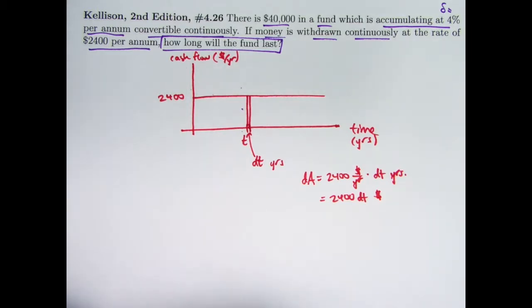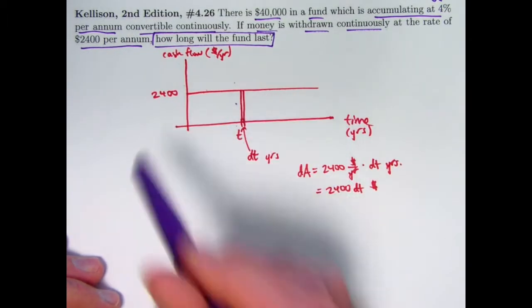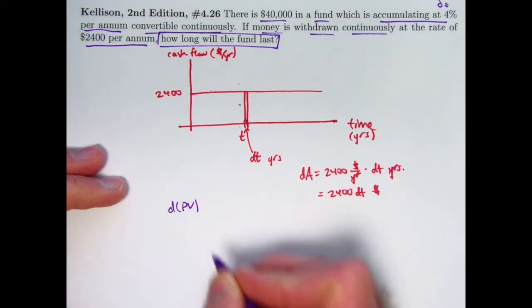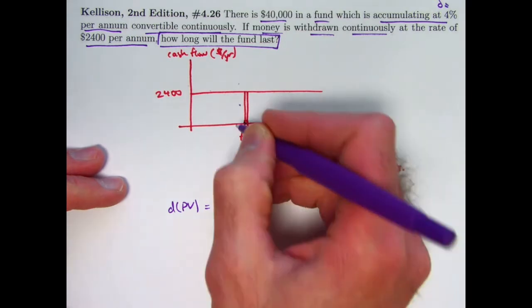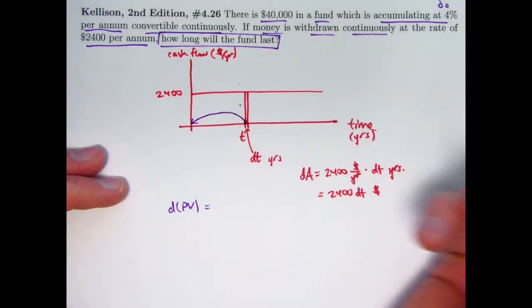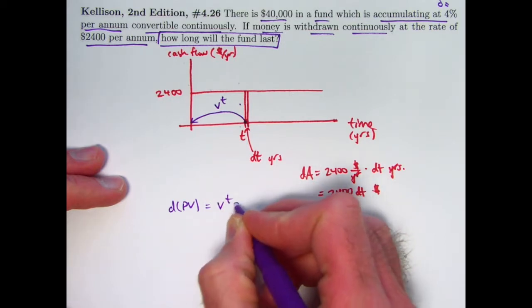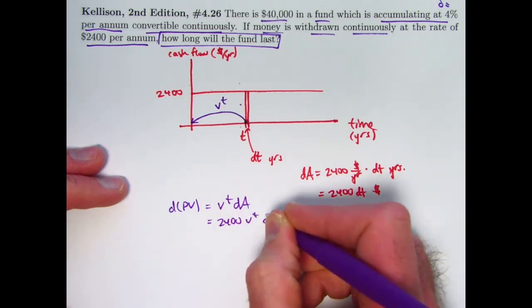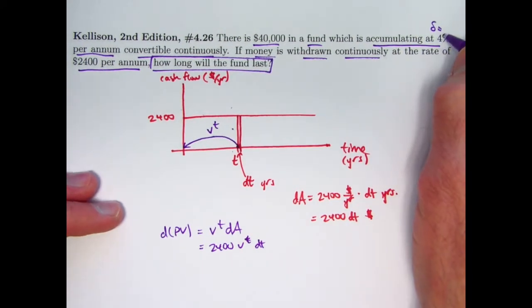What is the tiny present value of that tiny amount of money at that moment gone back to time zero? You might call that dpv or something, tiny present value. Well, it would be, take the discount factor, the annual discount factor of v, say, and raise it to the t power. Now, t doesn't have to be a whole number here, but that's okay. We can still multiply it by v to the t to get the tiny present value at time zero of this tiny amount. We could write v to the t dA, which would be 2400 v to the t dt. And if we want to make use of the force of interest here, delta, we should recall that v is equal to e to the negative delta.